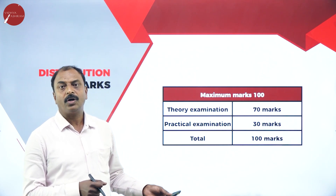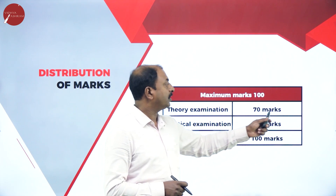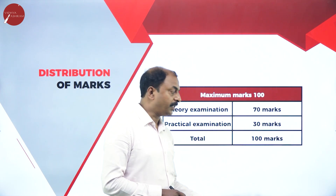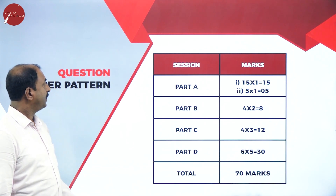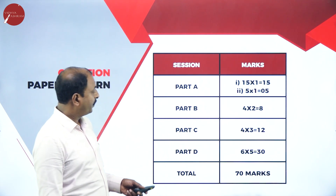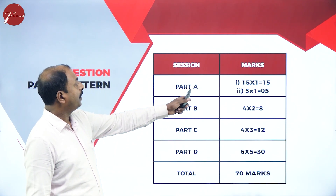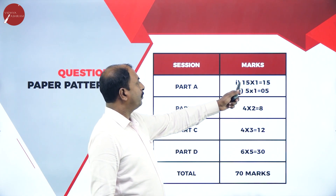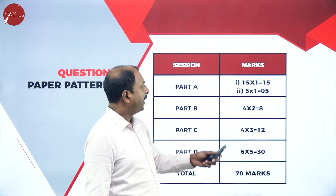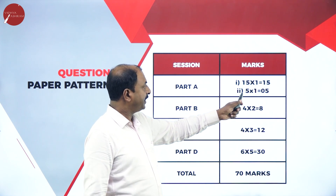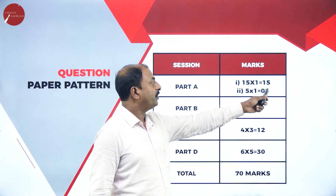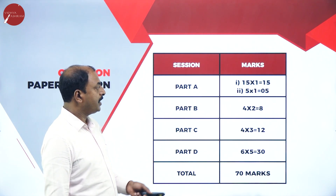The entire Computer Science paper is for 100 marks. Theory is for 70 marks — covering all the chapters discussed. Practical is for 30 marks. Now let us see the question paper pattern for First PUC Computer Science. The question paper has four sections. Part A has fifteen multiple choice questions, each carrying one mark, totaling 15 marks, plus five fill-in-the-blanks with options — so Part A is 15 marks total.